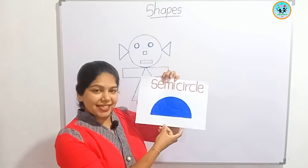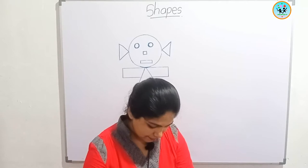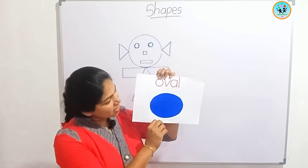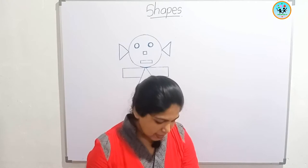This is called a semicircle. Semicircle. What is this? Semicircle. This shape is oval. Oval. What is this? Oval.